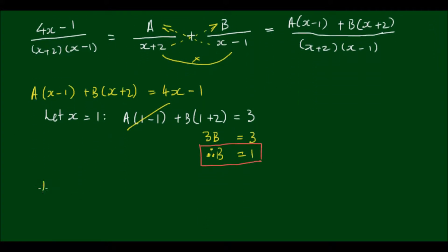Okay, so with B equals 1, our equation becomes A outside of (x-1) plus (x+2) is equal to 4x minus 1.